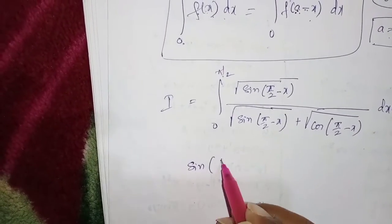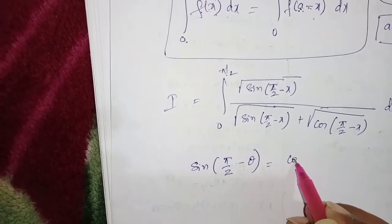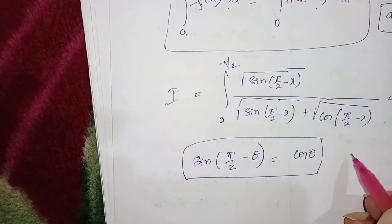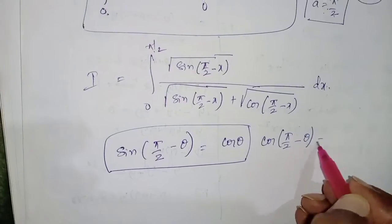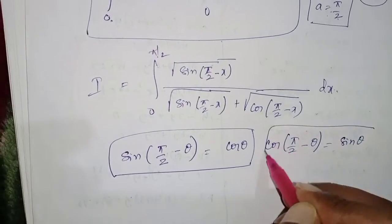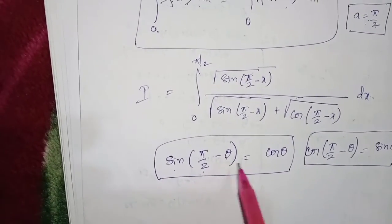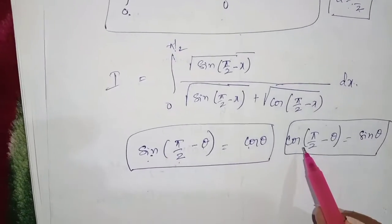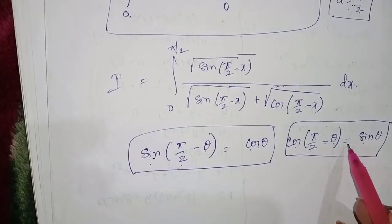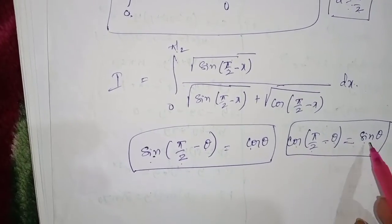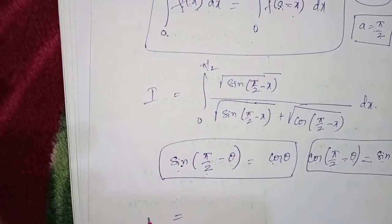We know that sin(π/2 − θ) = cosθ, and cos(π/2 − θ) = sinθ. So when we have sin(π/2 − θ), it turns to cos; and when we have cos(π/2 − θ), it turns to sin. Substituting these identities: